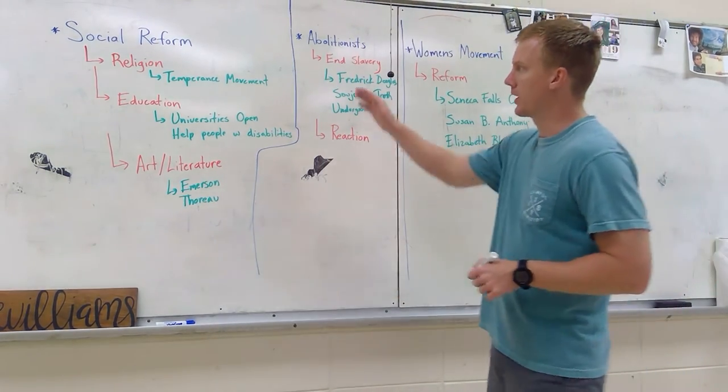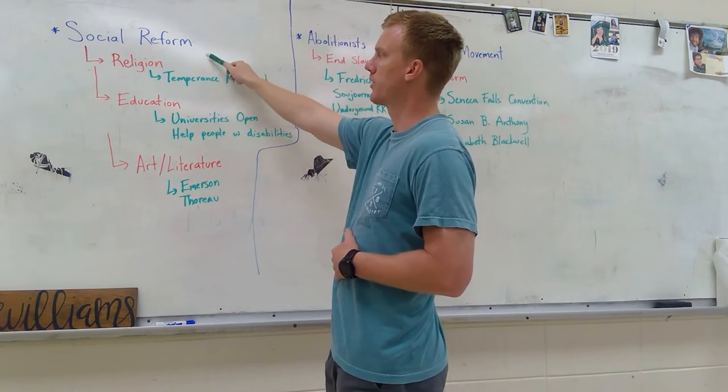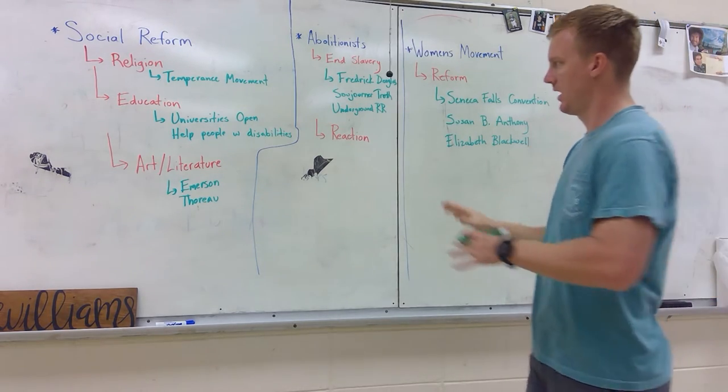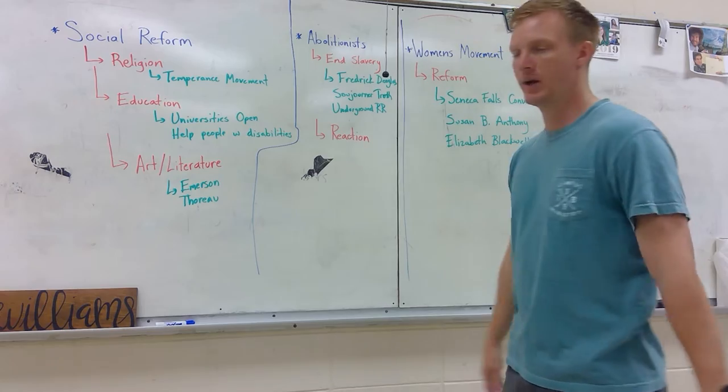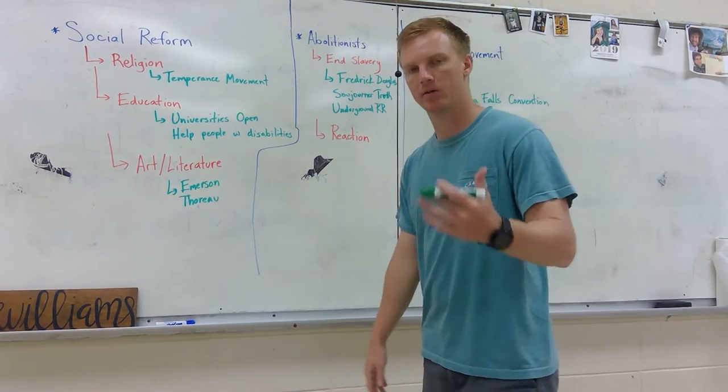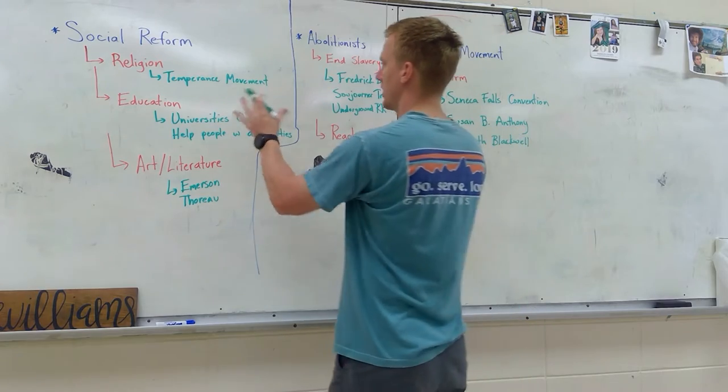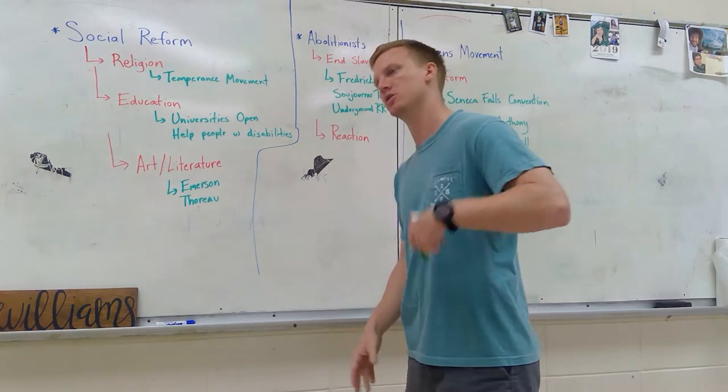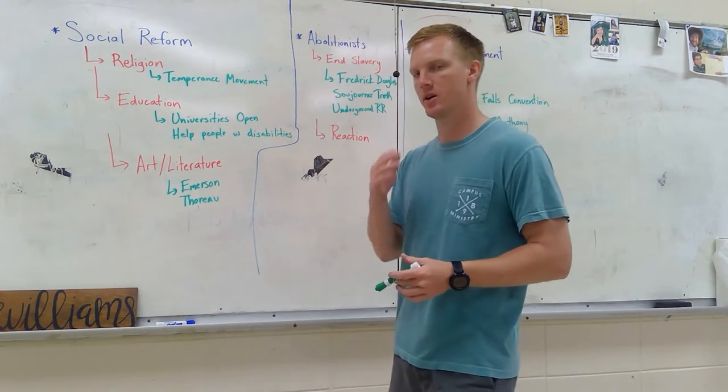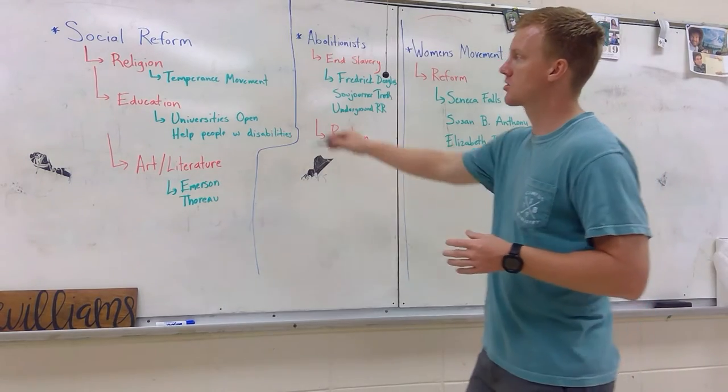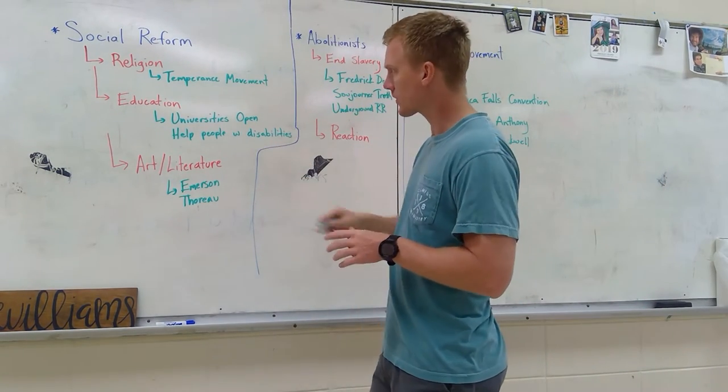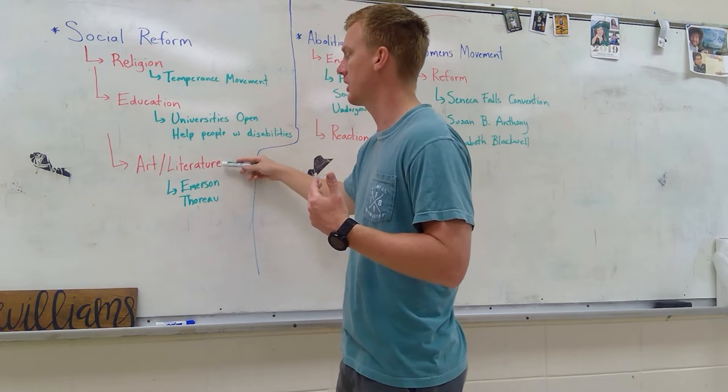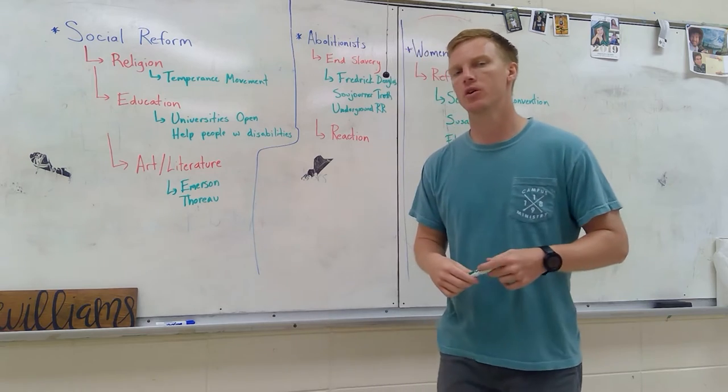Let's begin. What you guys have read, I've broken down into lessons for you. The first lesson was social reform, the second lesson was abolitionists, and the third lesson was women's movement. This is a summary. It's not extremely detailed like your reading essentials. I just want to kind of touch base with you guys and make sure we're on the same page.